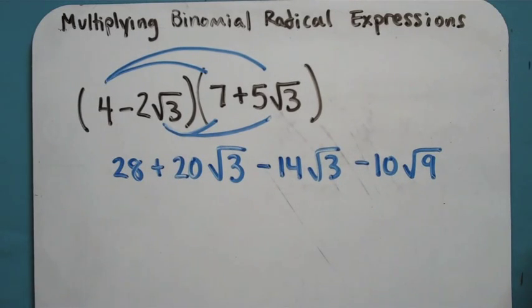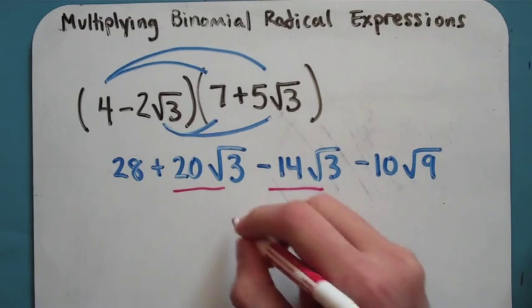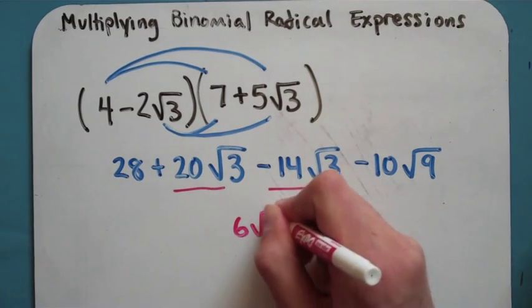So now it's just a matter of cleaning this up and getting my answer. First thing that jumps out at me is my 20 root 3 and my negative 14 root 3. Those will combine to make a 6 root 3 here.